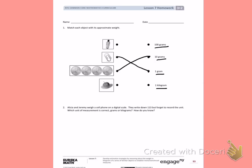Number 2. Alicia and Jeremy weigh a cell phone on a digital scale. They write down 113, but forget to record the unit. Which unit of measurement is correct? Grams or kilograms? How do you know?